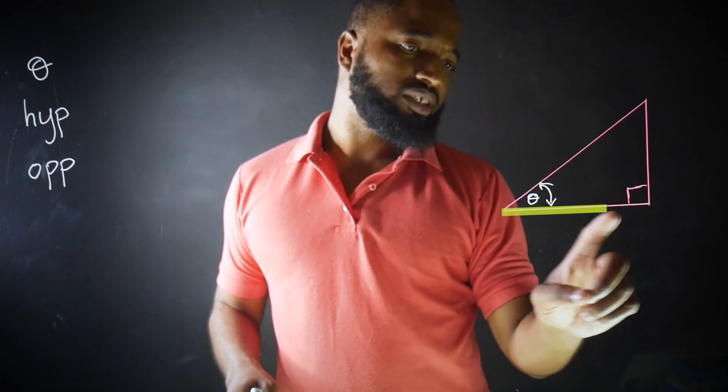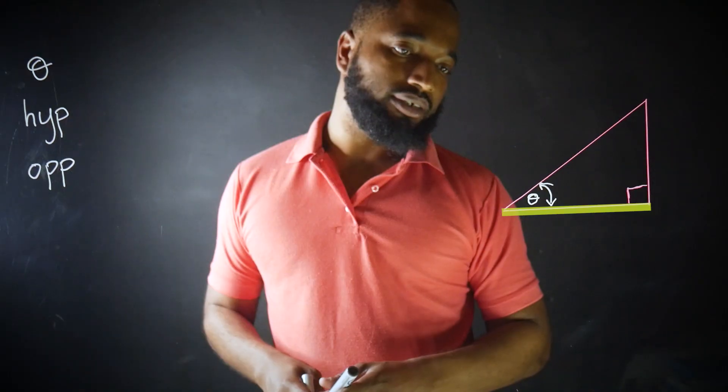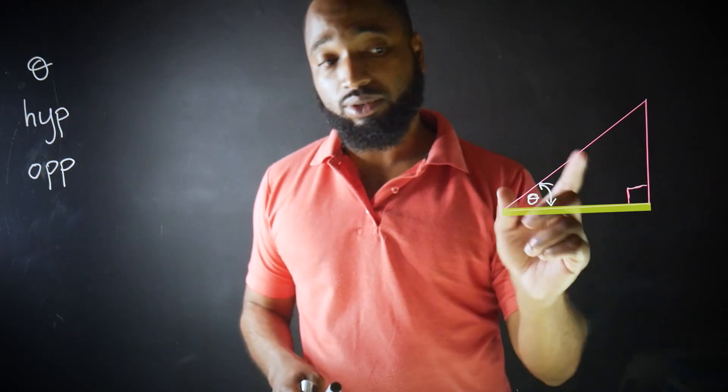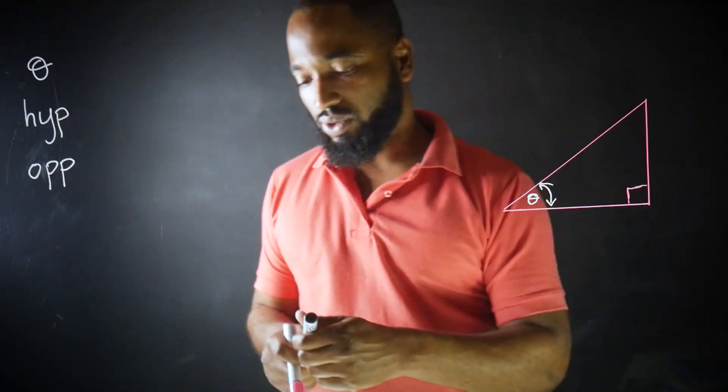That leaves the adjacent side. We call it the adjacent because it's right next to the angle. It's not the hypotenuse, but it's adjacent to the angle. We call that ADJ for short.